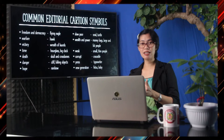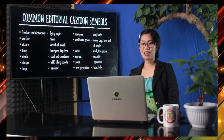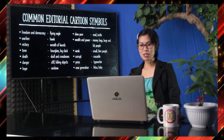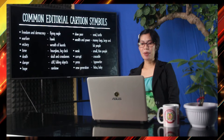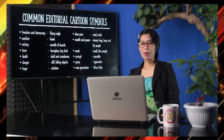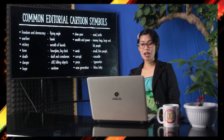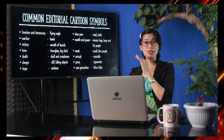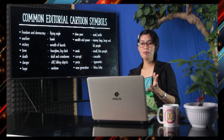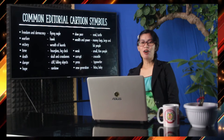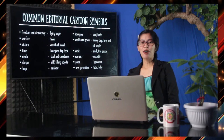Slow pace may be represented by a snail or turtle — which makes sense in reality since turtles and snails are naturally slow. Wealth and power may be represented by money bags or large, fat people, while weakness may be represented by small or thin people. Corrupt or opportunist individuals may be represented by a crocodile. The press may be represented by a typewriter, and a new generation may be represented by a fetus or a baby. These are just common symbols; I suggest you do more research for additional ideas.